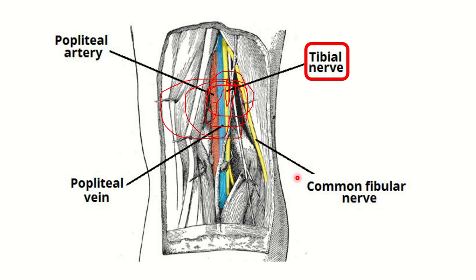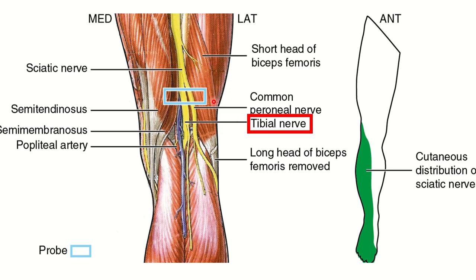We can also see another nerve, which is the common fibular nerve or common peroneal nerve — it lies on the lateral side of the popliteal fossa. This content and this relation is very important for the popliteal fossa. In this picture it is clear that the sciatic nerve divides into the tibial nerve and common peroneal nerve. The tibial nerve enters the popliteal fossa centrally and the common peroneal nerve runs laterally.